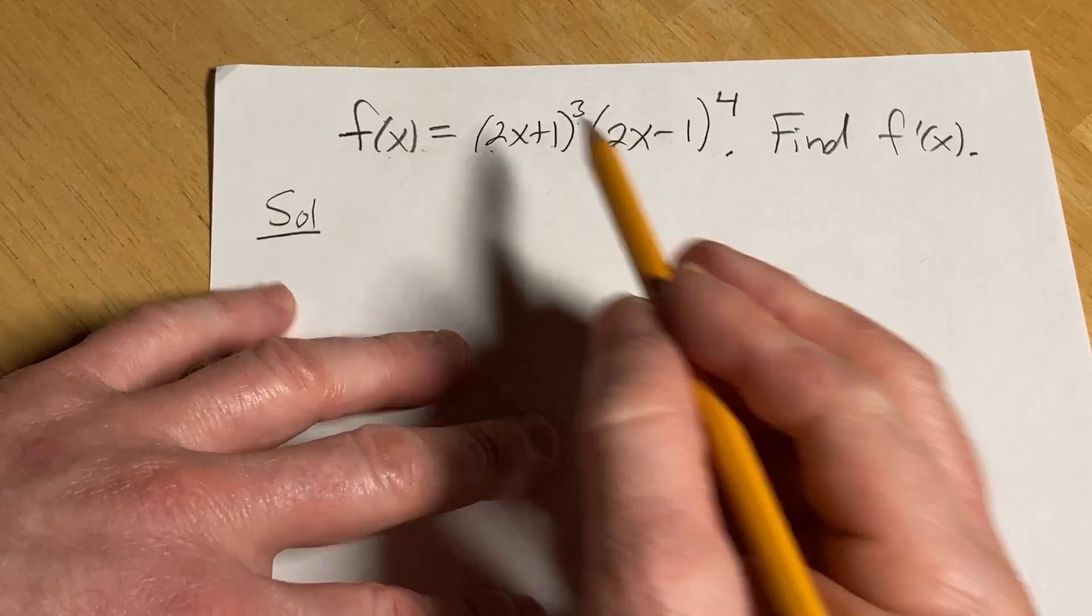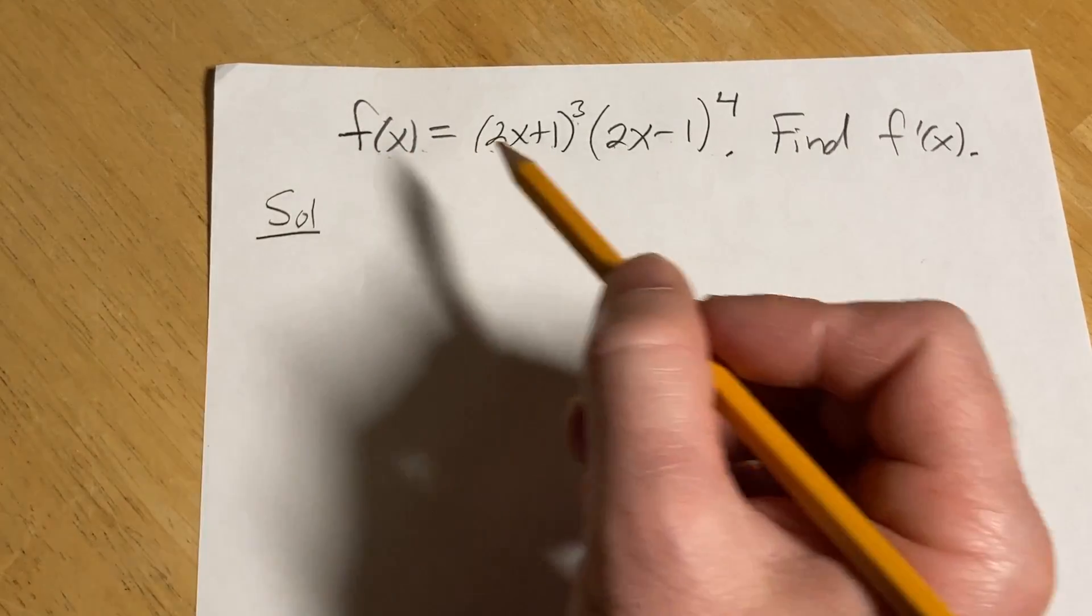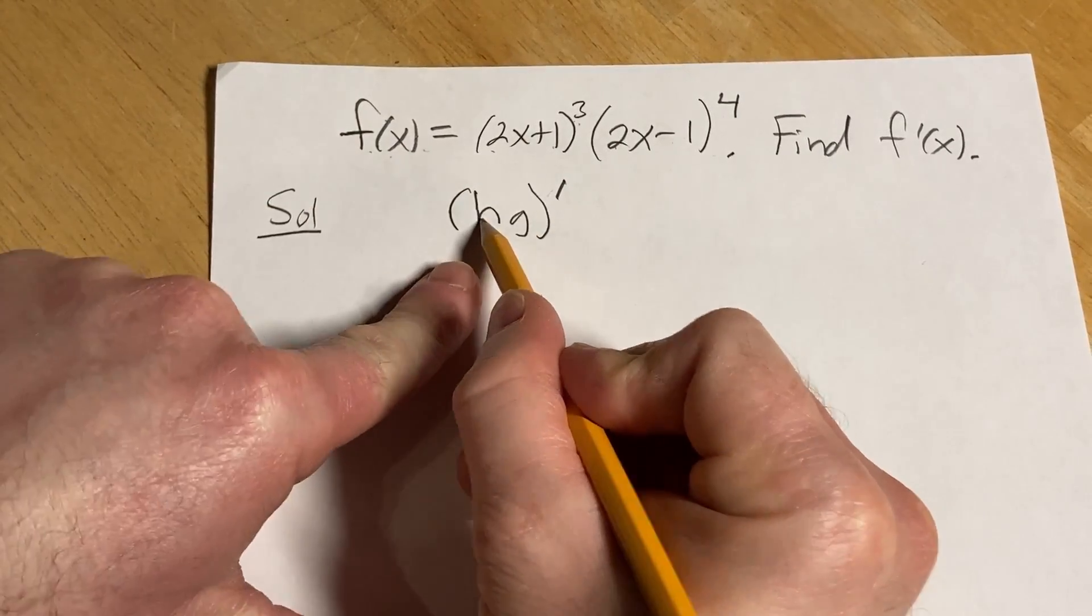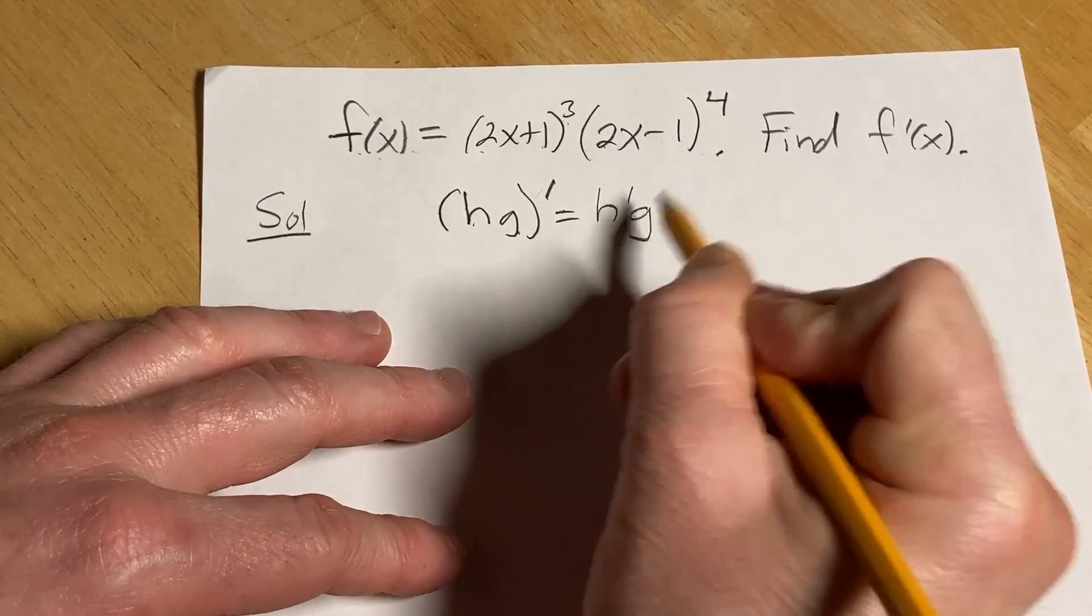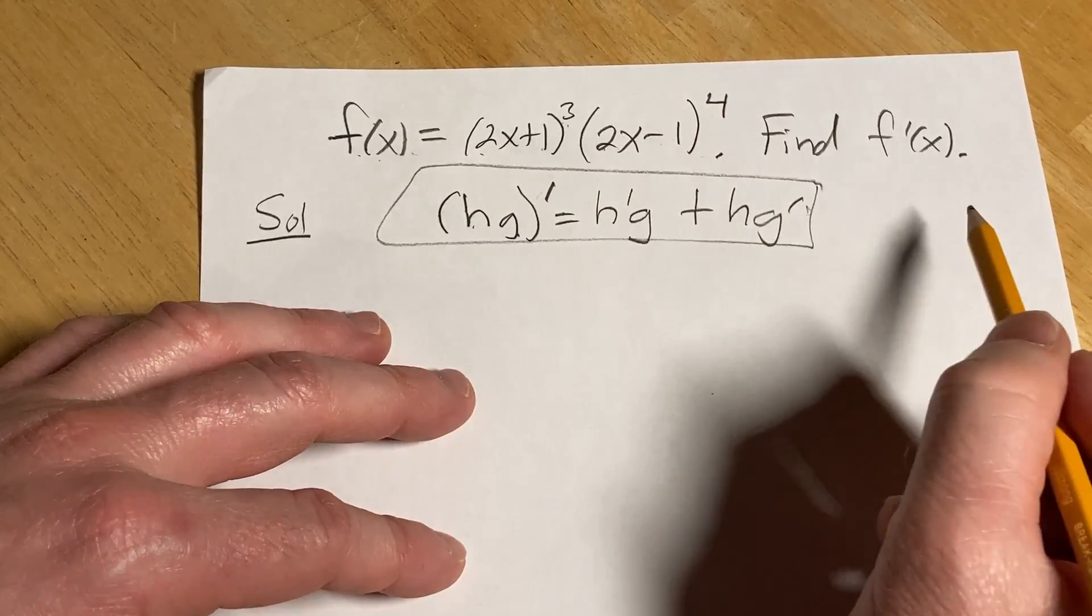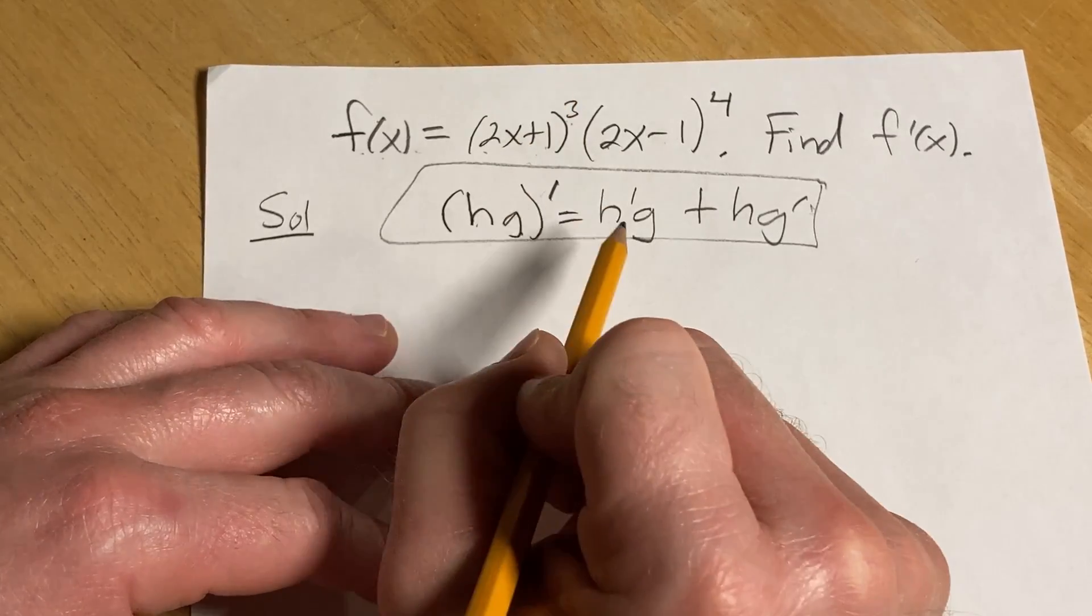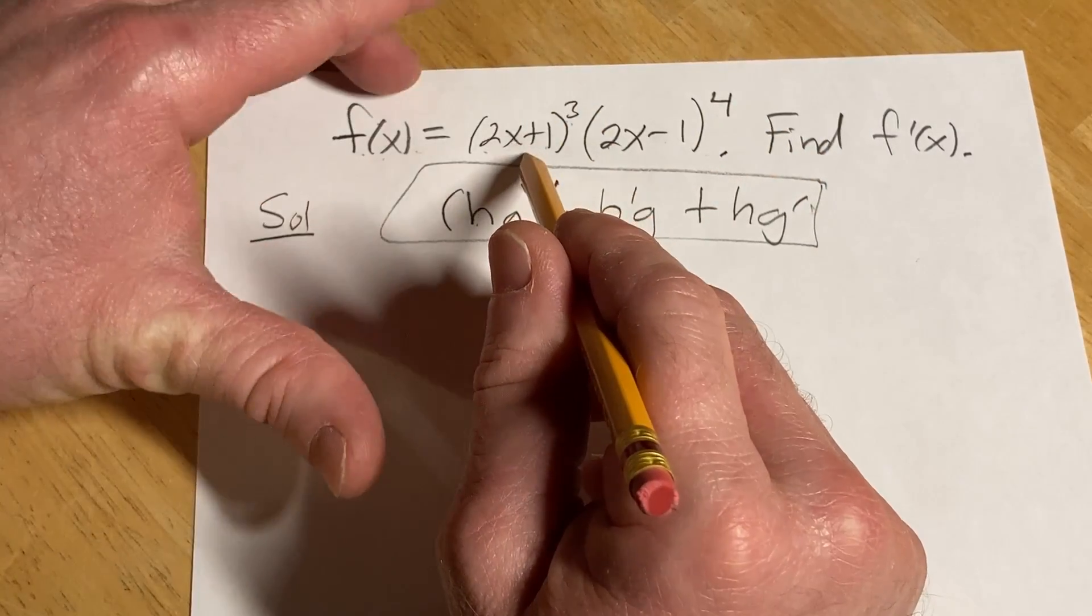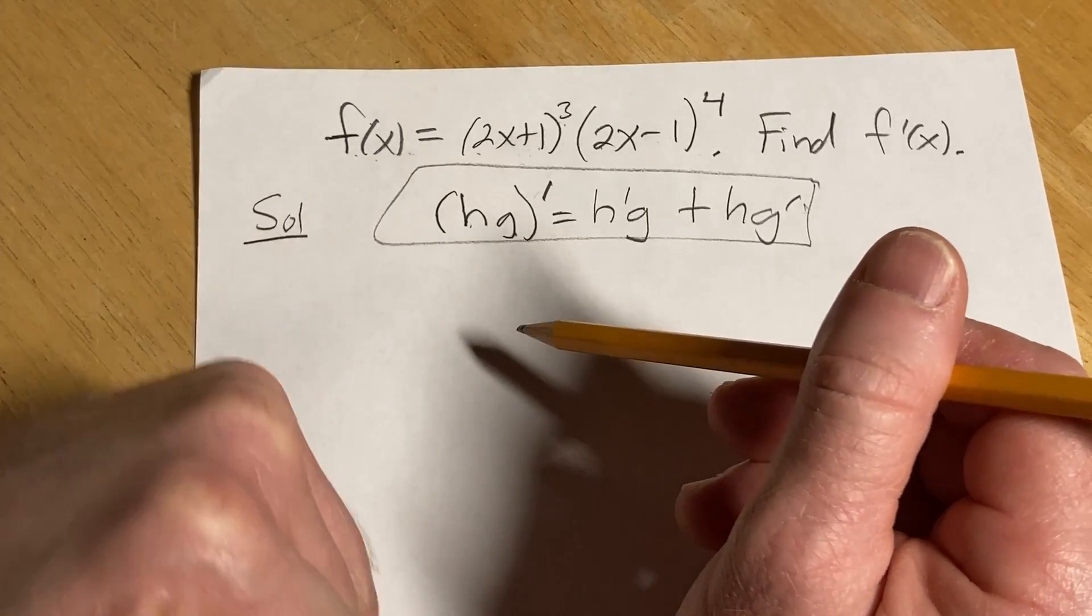So I'm going to start by writing down the product rule because it could be beneficial. And normally when you write down the product rule, you use f and g. I'm going to use different variables just because there's already an f in the problem. So I'll use h and g. So think of h as your first function and g as your second function. So it's the derivative of the first times the second plus the first times the derivative of the second. So this is the rule we're going to apply in this problem. However, every time we take a derivative, we're also going to use the chain rule because it's not just like x to a power where we bring down the number and use the power rule. We also have an inside function. So we'll have to multiply by the derivative of that inside function when we take the derivative.